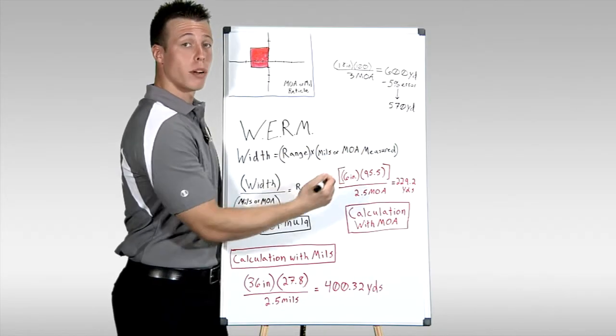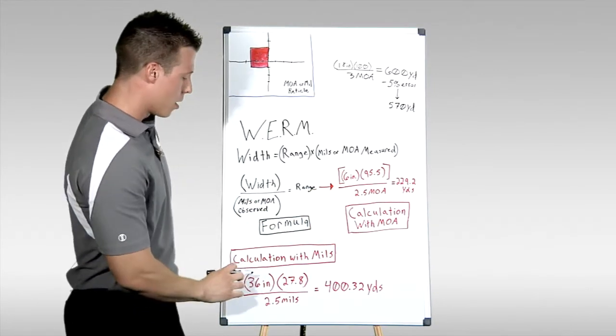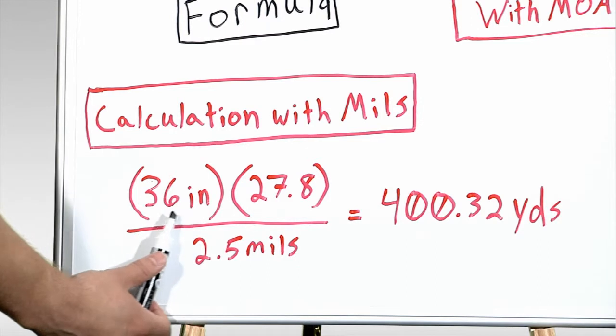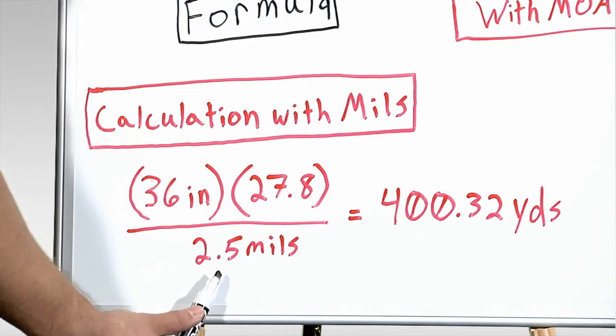Let's mix it up a little bit. Let's try a problem with mils instead of minute of angle. So if we look down here, we'll say our target is 36 inches wide, a one yard wide sheet of cardboard. And again, we're milling out our target, and we see that it takes up 2.5 mils instead of 2.5 MOA.